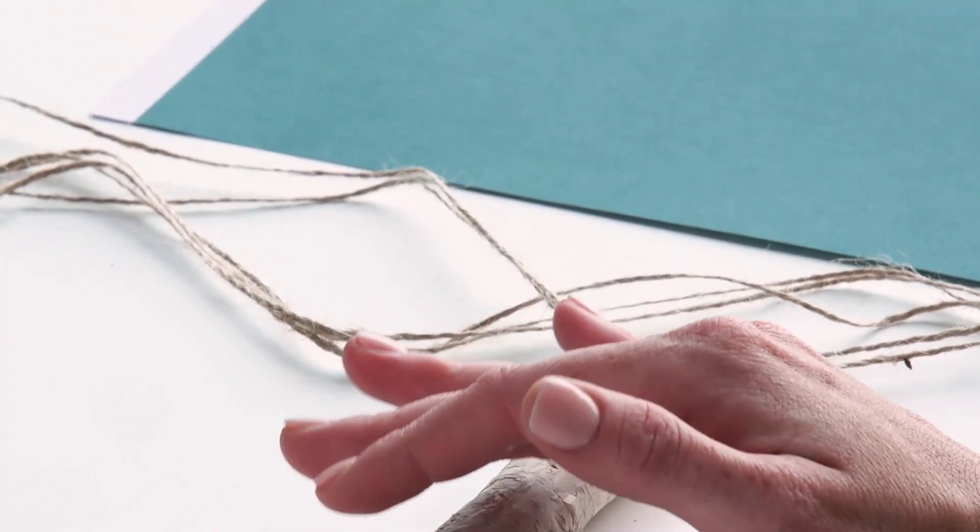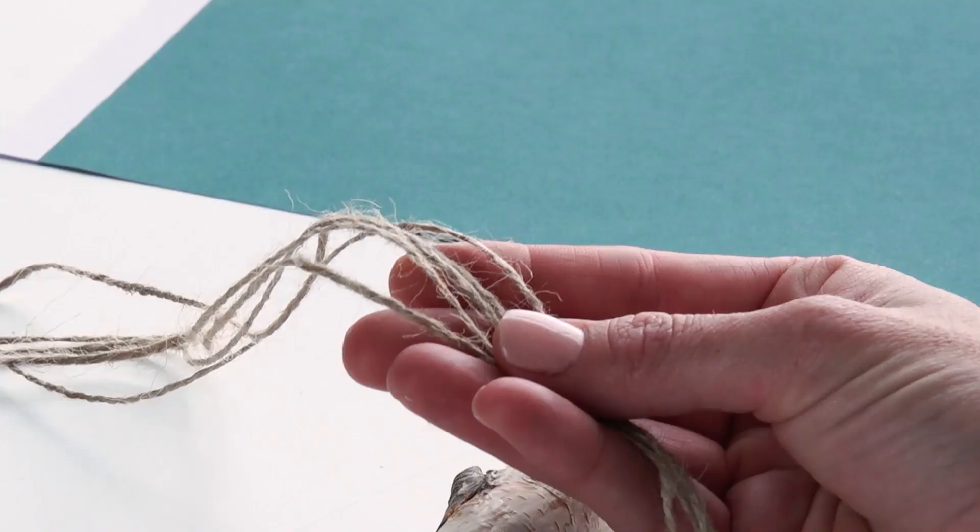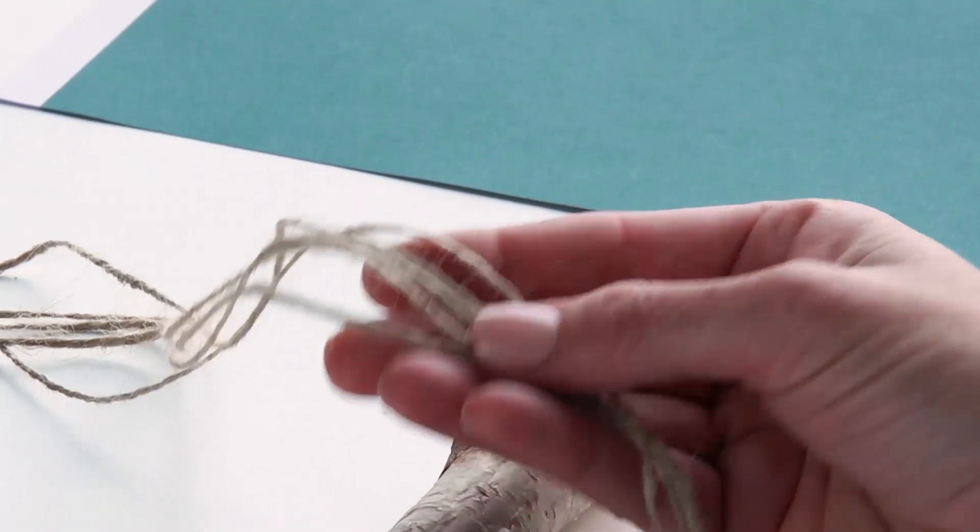You'll also need twine. Any of those will work for this project. Depending on what you're going to use this project for, if your installation is going behind a cake for instance, you're going to want it a little shorter. If it's for a photo booth backdrop, make sure it's nice and long. Cut it to that length.